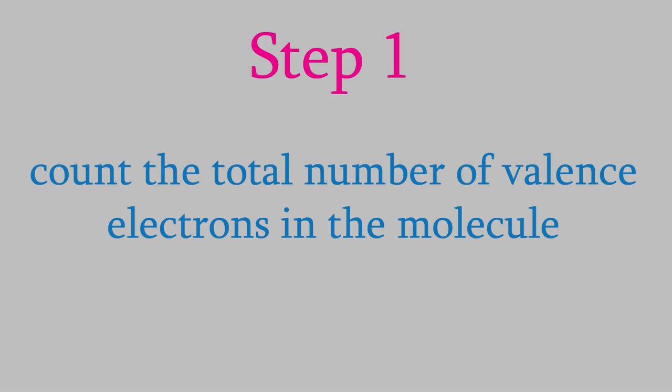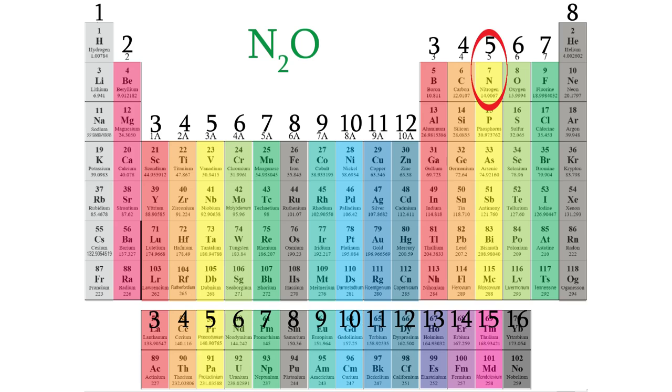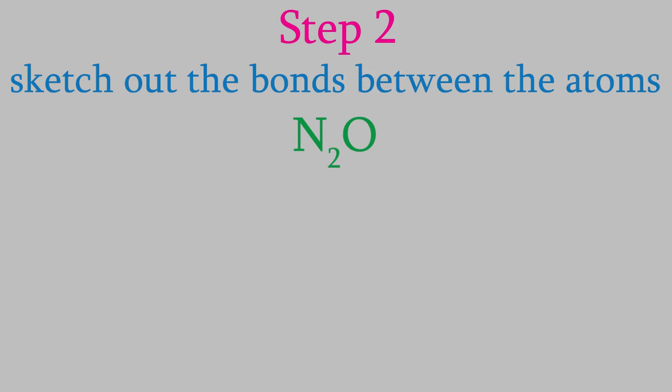Here's how we do that. We still follow the rules we learned in the last video for determining a Lewis structure. So, you might recall that in step 1, we count up the valence electrons. There are 5 for each nitrogen, and 6 for the oxygen, for a total of 16. Now in step 2, we sketch out the connections between the atoms. But this time, we don't know which atom is in the center of the molecule. So, we'll draw both possibilities.